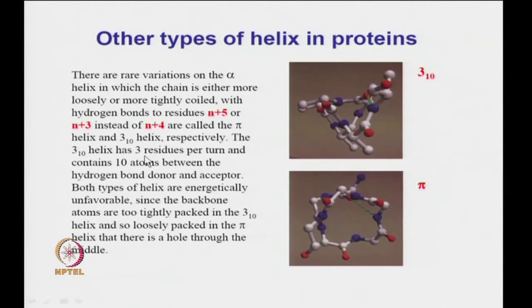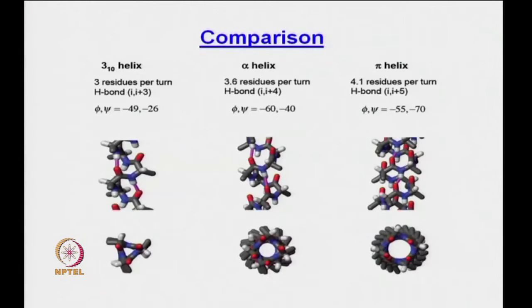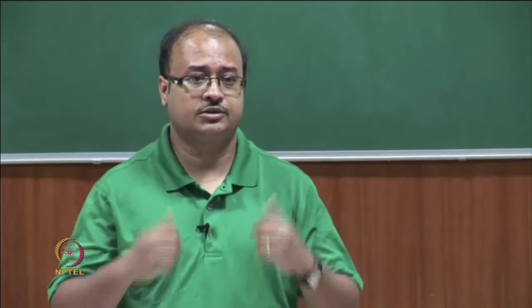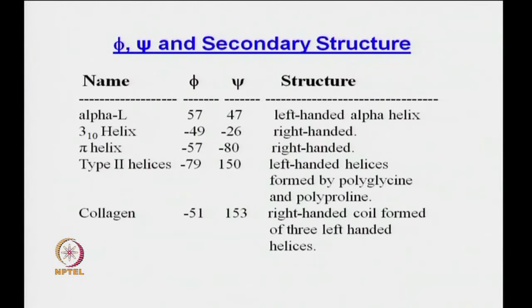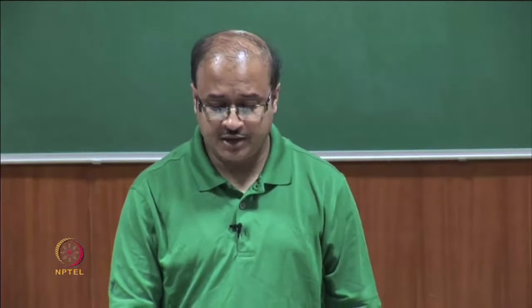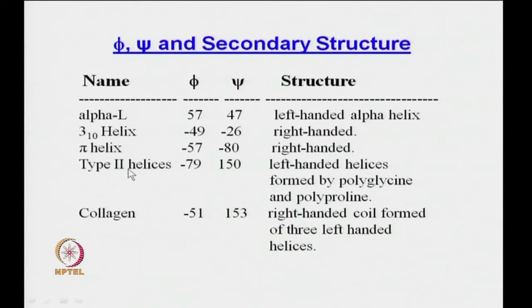The 3₁₀ helix has 3 residues per turn. For a quick comparison: on the left is the 3₁₀ helix with its phi and psi angles, in the middle is the alpha helix showing side chains protruding out, and on the right is the pi helix which looks much looser. On the Ramachandran plot, the 3₁₀ helix and regular alpha helix occupy different regions. The left-handed alpha helix has phi +57, psi +47, in the positive quadrant. There are also type 2 helices adapted by polyproline, polyglycine, and collagen, which we will come to later when we discuss helix-helix packing.